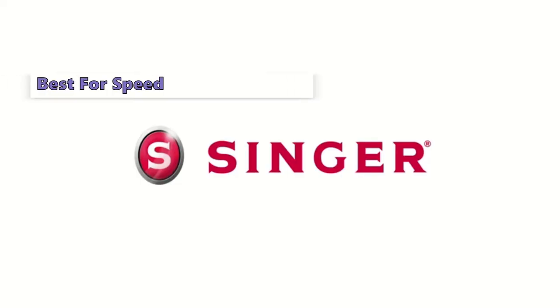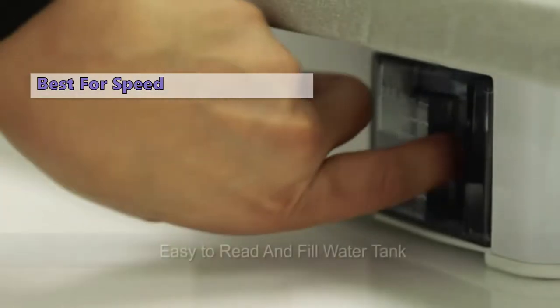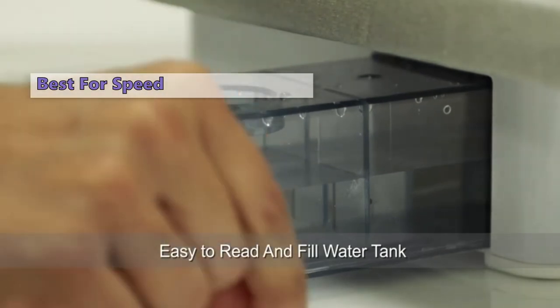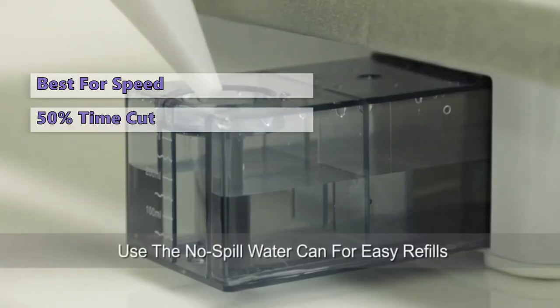If you are looking for a high-speed steam iron, the Singer ESP2 Magic Steam Press is worthy. Though it is not the most powerful steam press around, it does have a large pressing surface area and can work on both sides of your garment simultaneously. This means that it can cut your ironing time by about 50%.